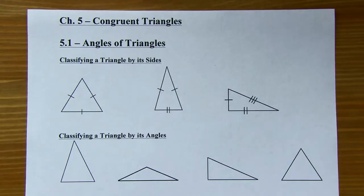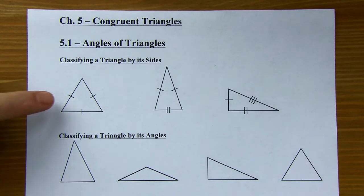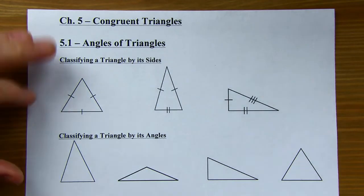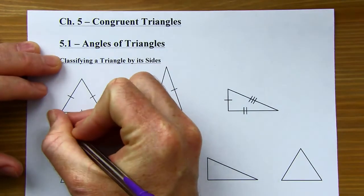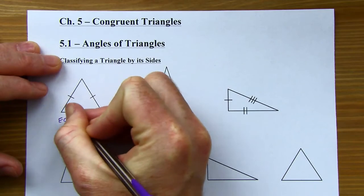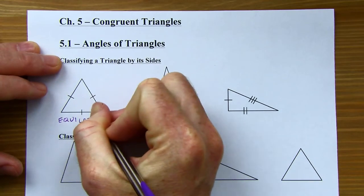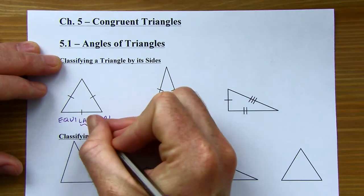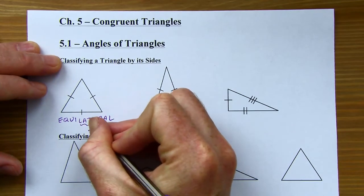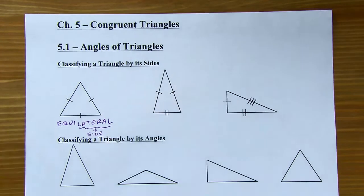So first off, classifying a triangle by its sides. When all three sides of a triangle are congruent, that is called an equilateral triangle. 'Lateral' means sides, or a side. So equal sides — you can think of it that way.